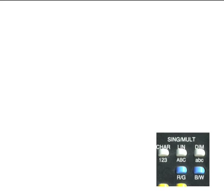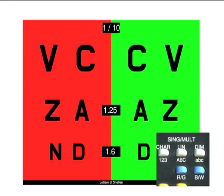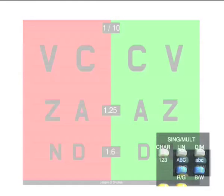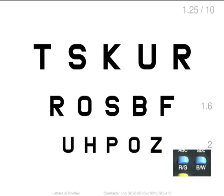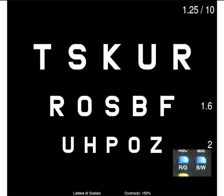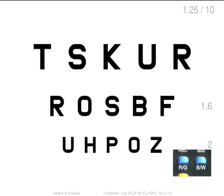Two more displays are visible by pressing the red and green key. A table will be divided with a green background on the right and a red one on the left. The black and white key, on the contrary, allows to invert the background color with the eye chart.